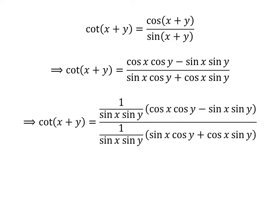As multiplying the numerator and the denominator by a common factor does not change the value of the fraction, let's multiply the numerator and the denominator by 1 upon sine of x times sine of y.